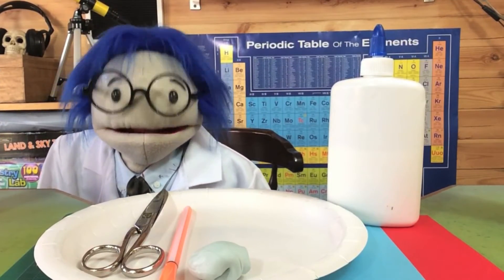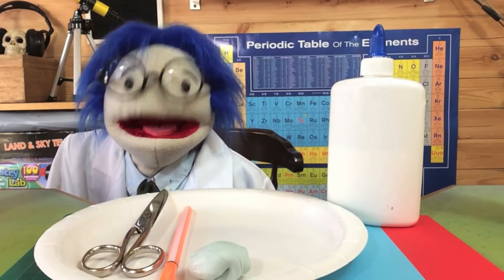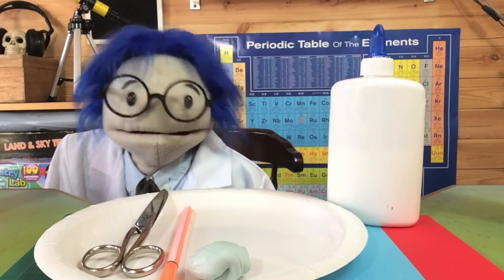Making a zoetrope is lots of fun. In order to make one, you'll need a paper plate, some glue, a pair of scissors, a pen, some blue tack, and some card.